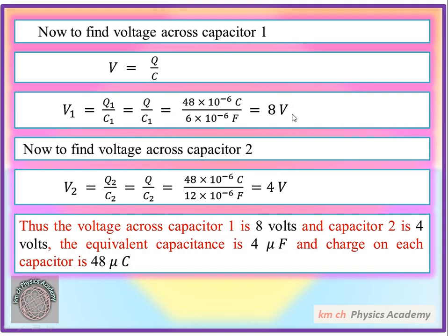To find voltage across capacitor 2, we use V2 = Q2/C2. Q2 = 48×10⁻⁶ C and C2 = 12×10⁻⁶ F. The powers of 10⁻⁶ cancel each other. 48 divided by 12 equals 4. Coulomb over farad gives volts, so V2 = 4 volts.